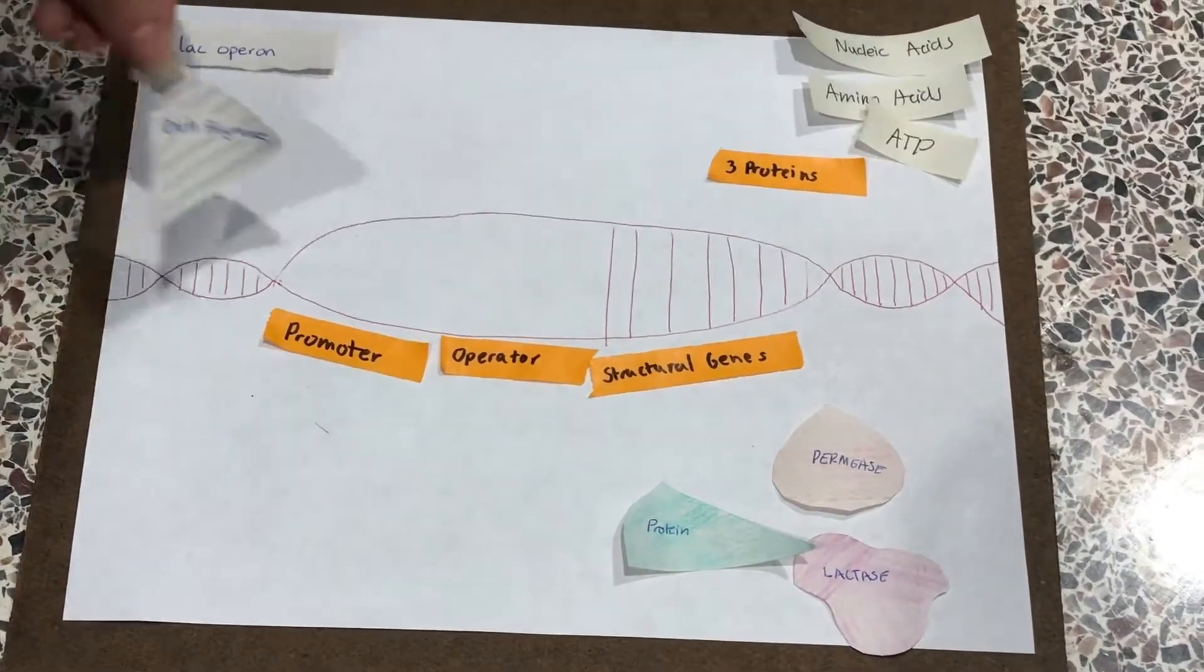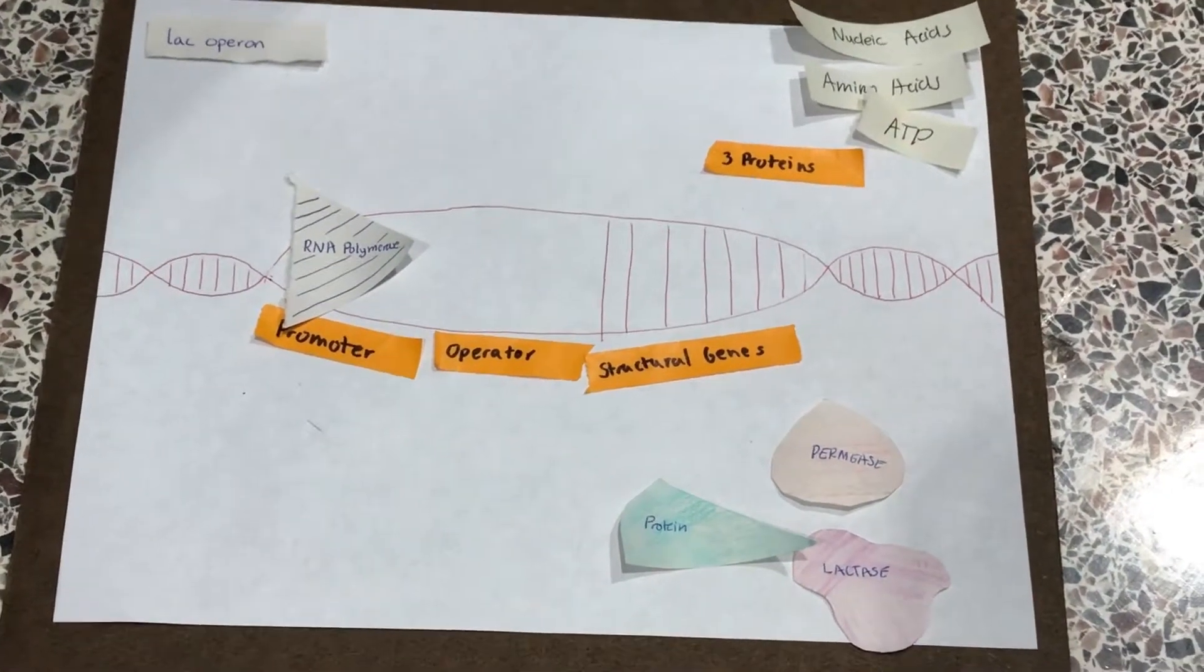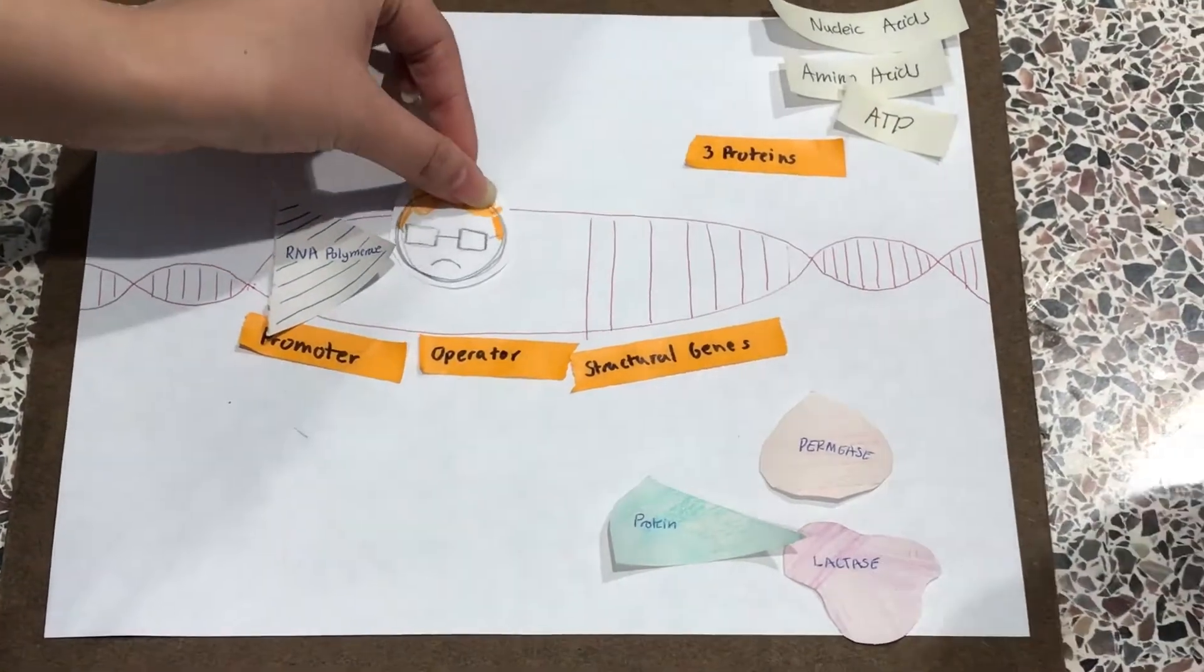Now how do these structural genes get read? It's through the use of RNA polymerase which reads these genes and makes mRNA for the synthesis of proteins.